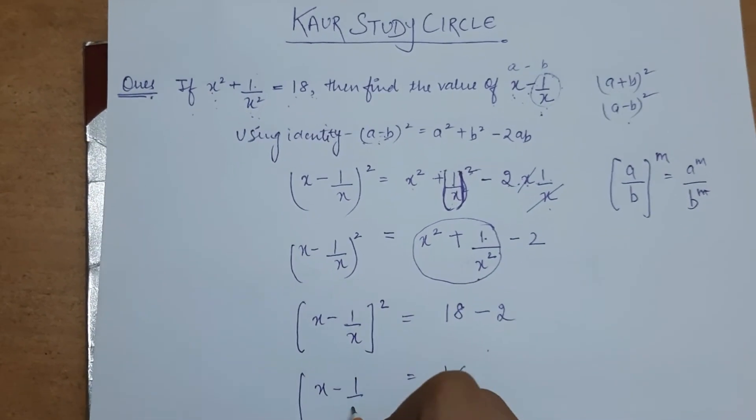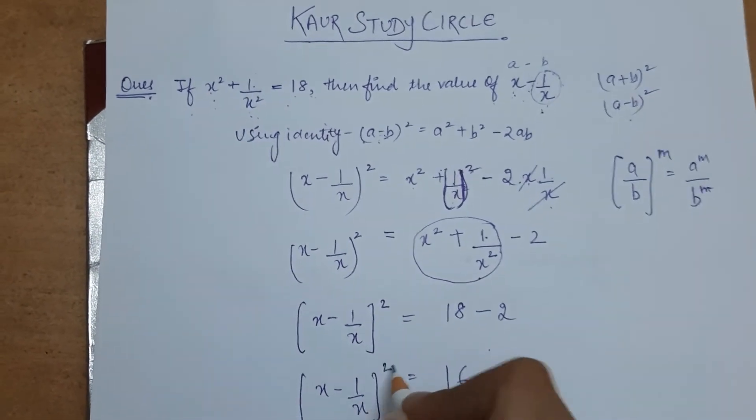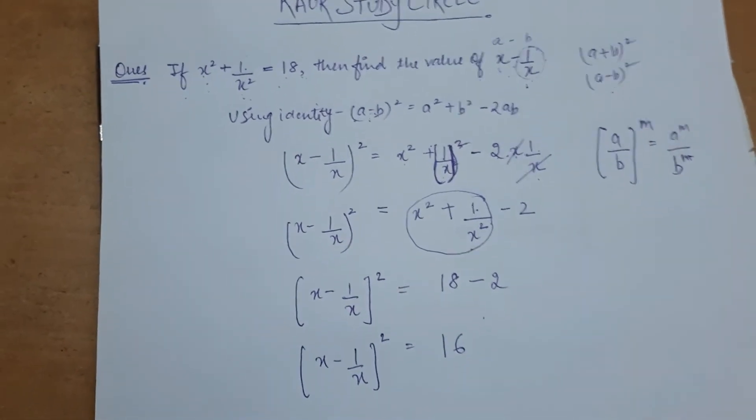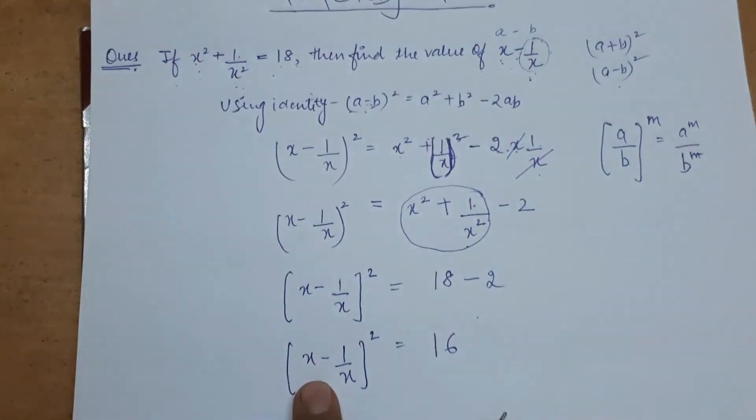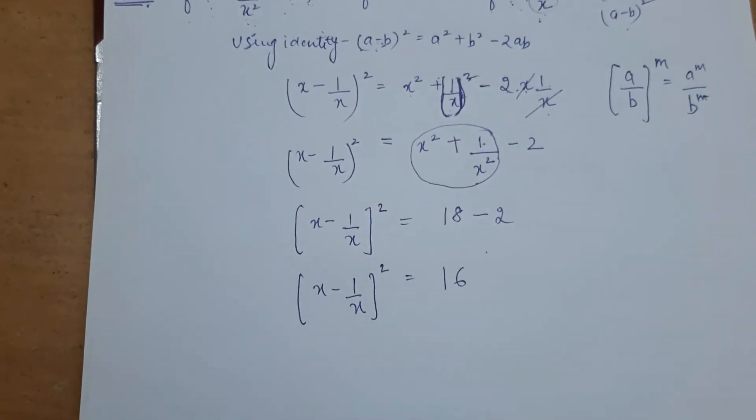So you can write here the value which is given in the question, which is 18 minus 2 is 16. Now what is left? We have to find x minus 1 by x value, but we found its square value.